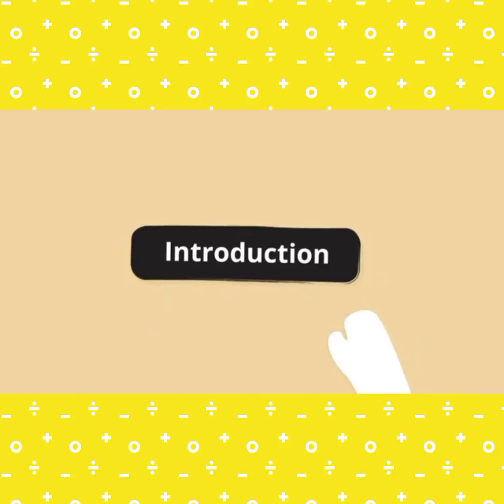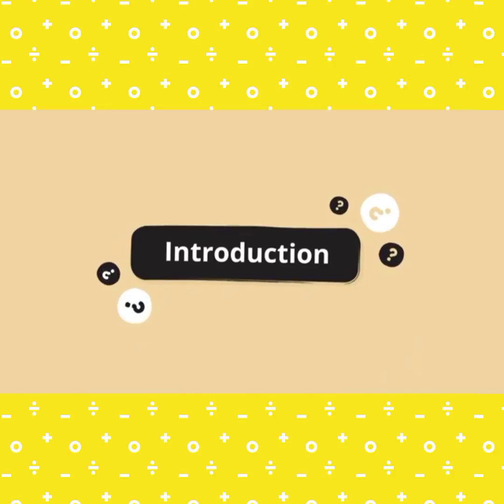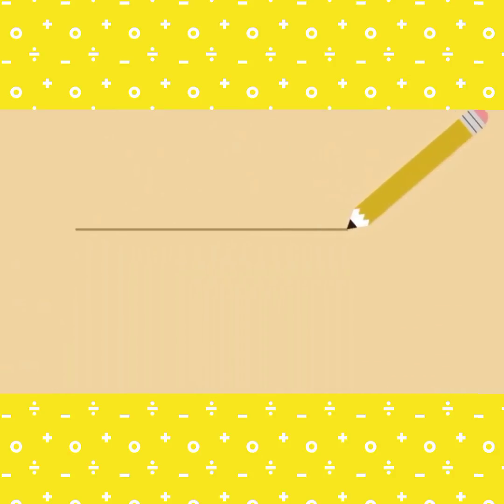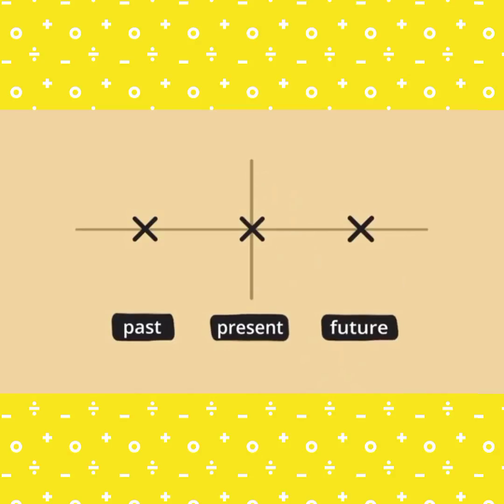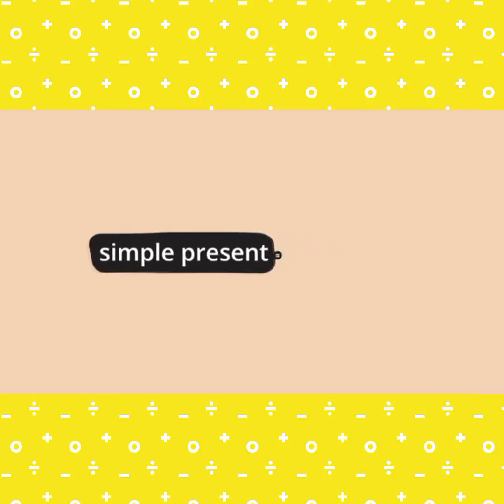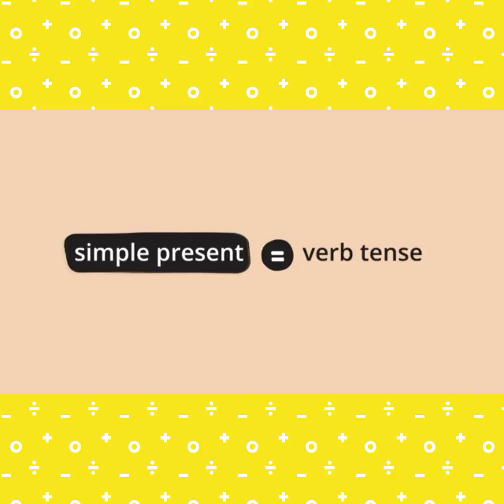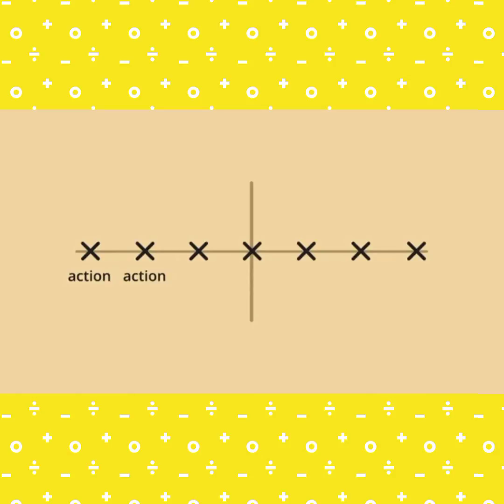Simple present. What are verb tenses? Verb tenses show the time that an action takes place. Simple present is a verb tense. We use simple present tense for repeated actions. Repeated actions happen over and over again. Here are a few examples.